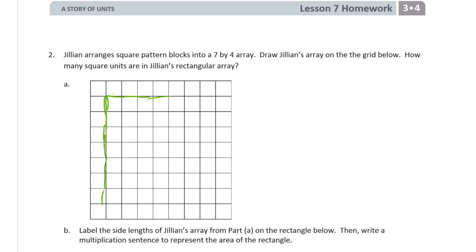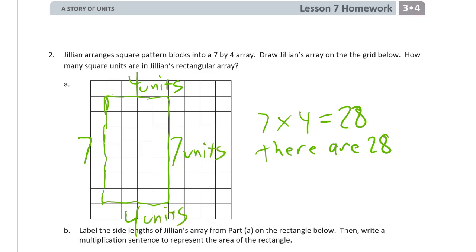Now it just says a 7 by 4 array. You don't have to have 7 rows of 4. You could do it with 4 rows of 7. Because I think the grid is big enough to do it either way. And I'm going to label it 4, 7, 7, 4. How many square units? 7 rows of 4. That's 28. There are 28. There are 28. And these are units. There are 28 square units.